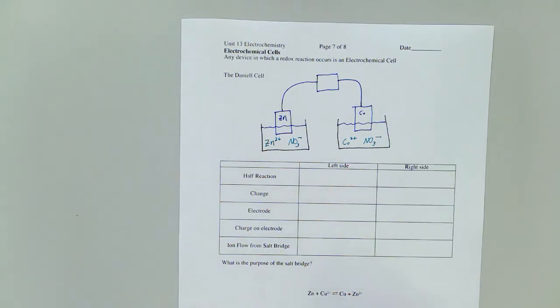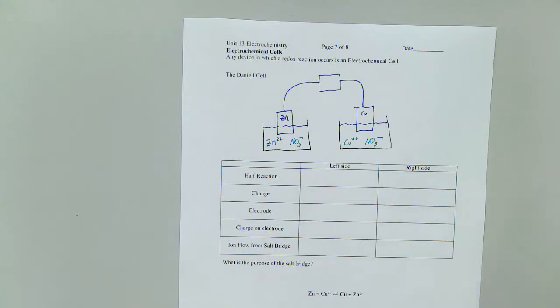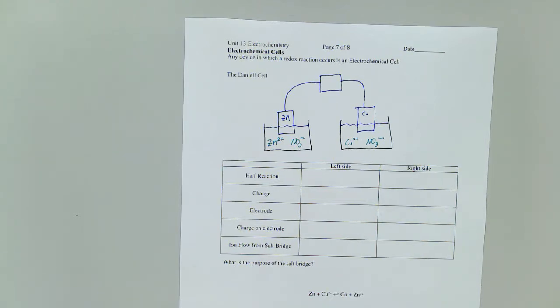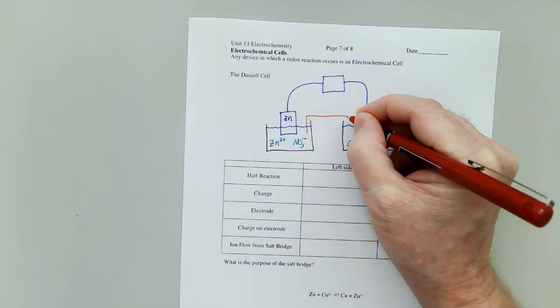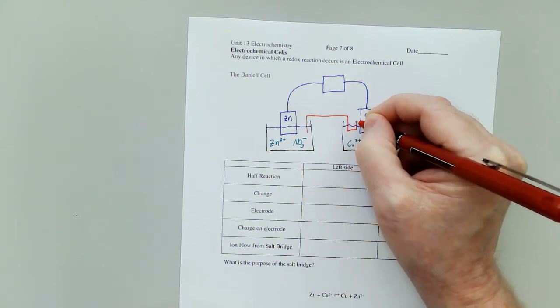And nitrate. Okay, now the final piece of this puzzle is called a salt bridge. And what this basically does is complete the circuit.